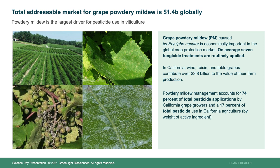The next step is to continue to optimize the delivery technologies to overcome these barriers and demonstrate activity in the greenhouse as quickly as possible. The next project is powdery mildew, the largest driver for pesticide use in viticulture. The biggest challenge areas are California, Washington, and Oregon, with a smaller area in New York. Powdery mildew is caused by Erysiphe necator and is an economically important pest. In California, an average of seven fungicide treatments are applied, accounting for 74% of total pesticide applications by California grape growers and 17% of the total pesticides applied in the California agricultural system.